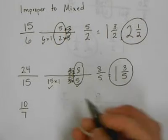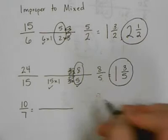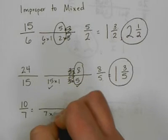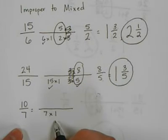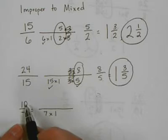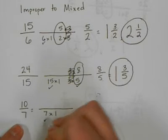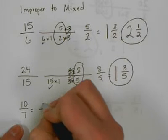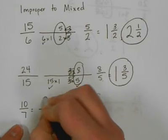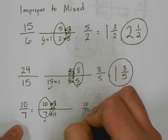Let me do one more. Let's do 10 sevenths. We'll simplify it first. 7 times 1. That's the only factor for 7, so we stop. Does anything times 7 give me 10? No. Does anything times 1 give me 10? Yes. 1 times 10. Lose what's the same, keep what's different. 10 sevenths.